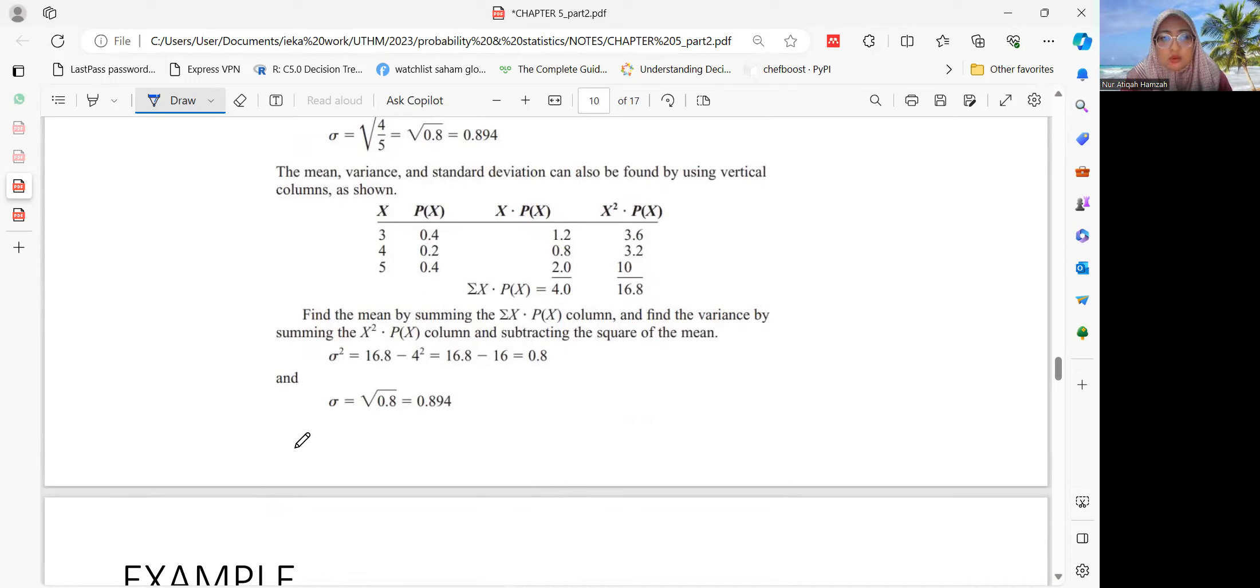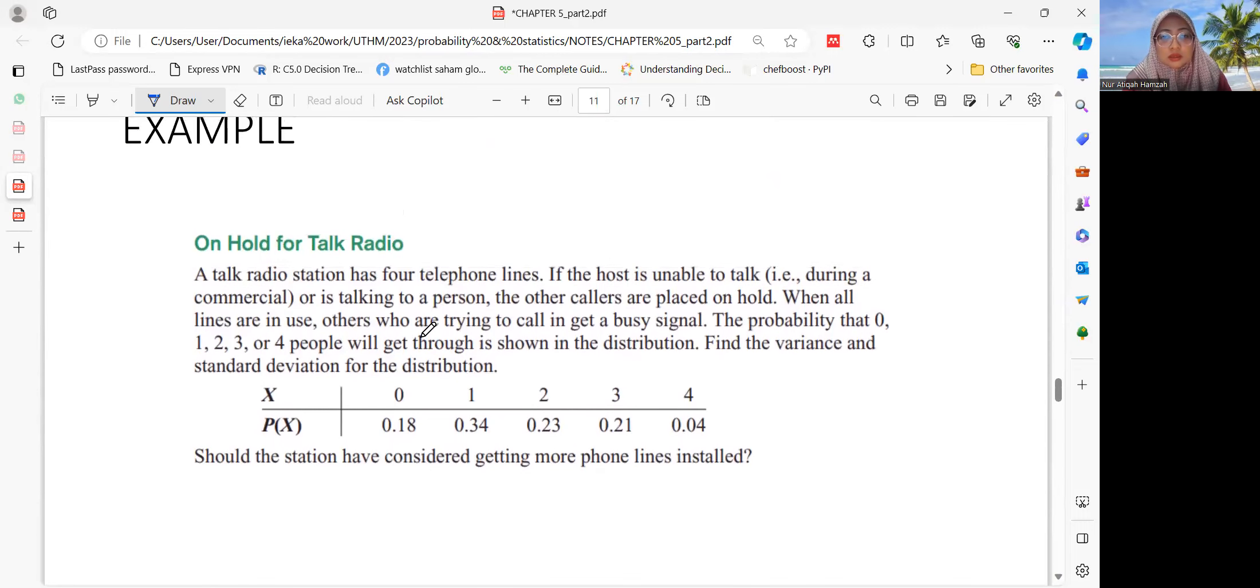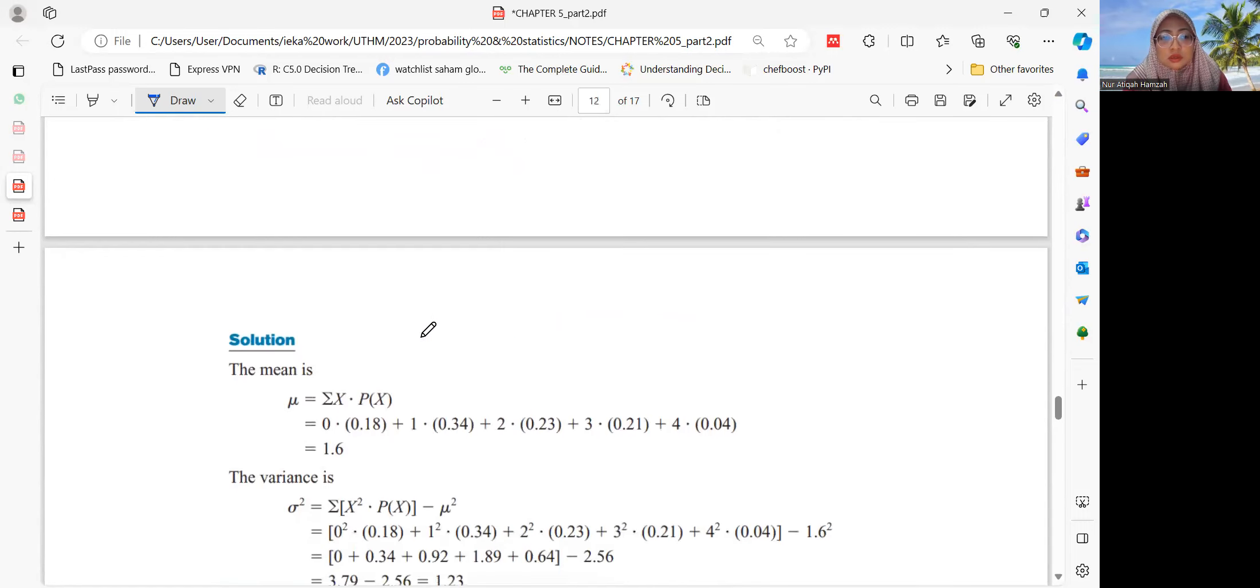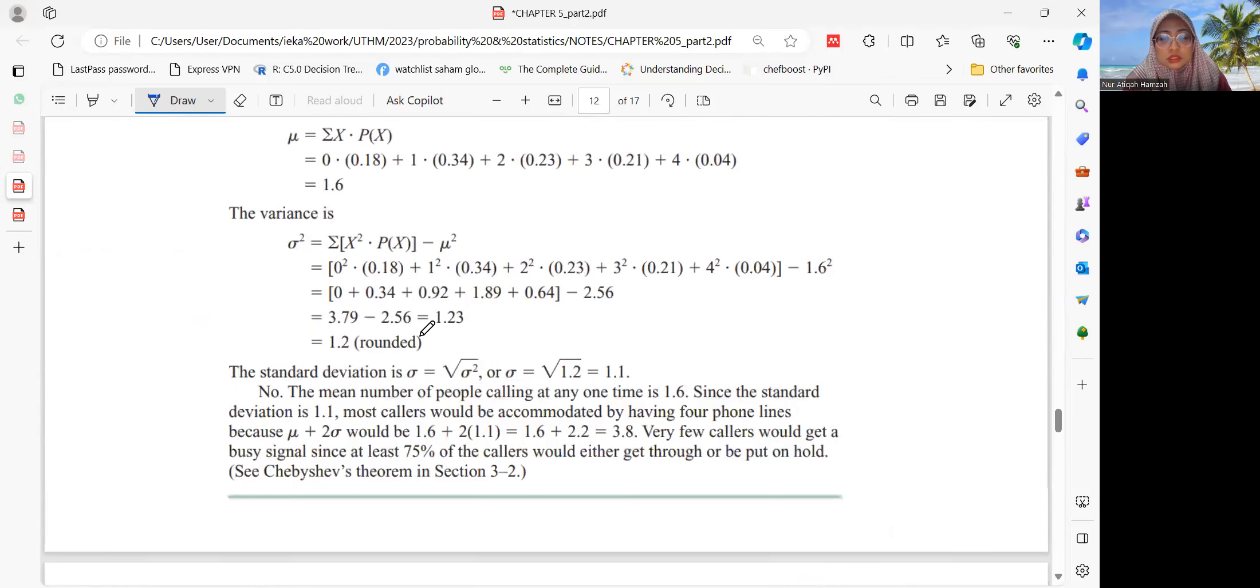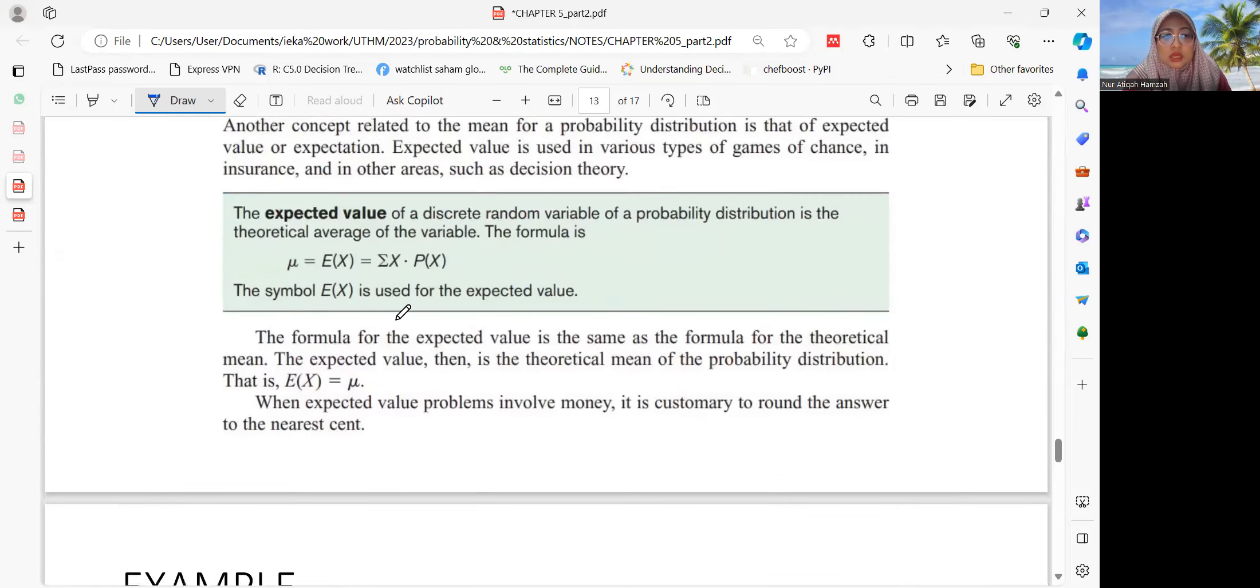You can also, if you want it easier, make it in table form. We have x and P(x). So we can get x P(x) and then x squared P(x). Then insert into the formula.